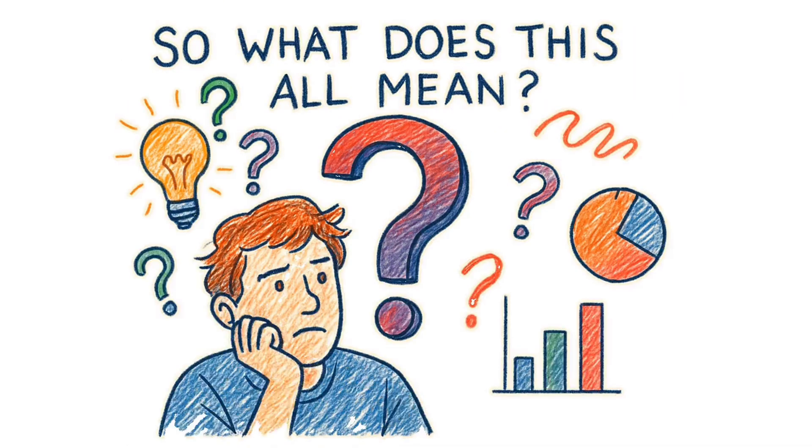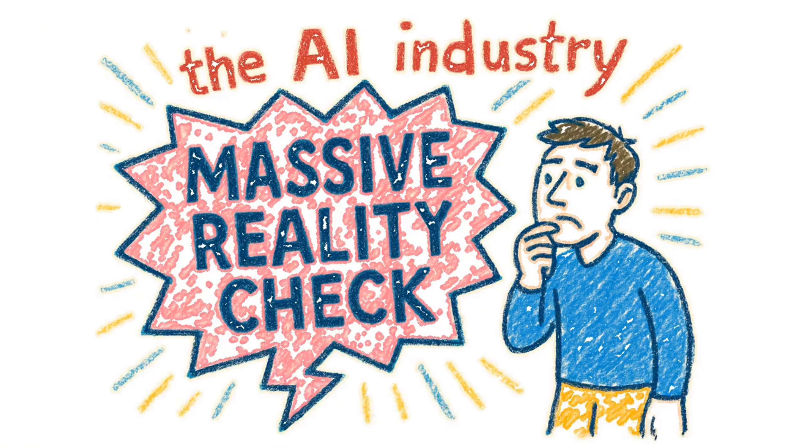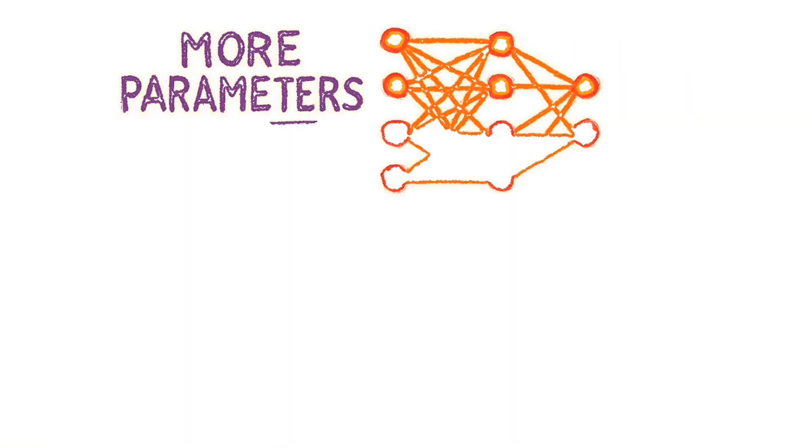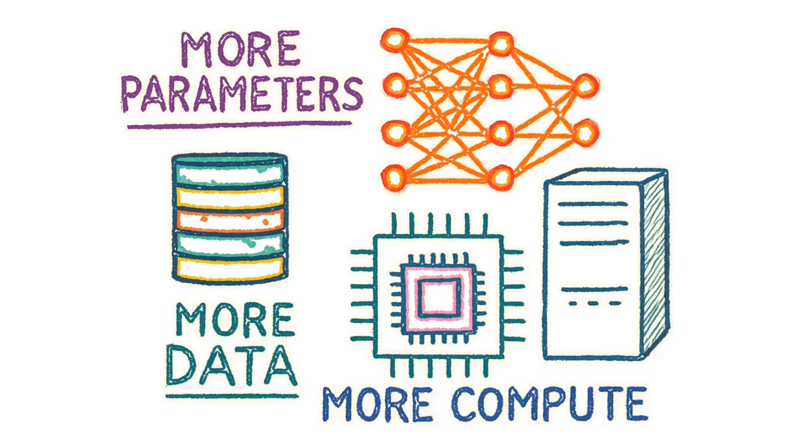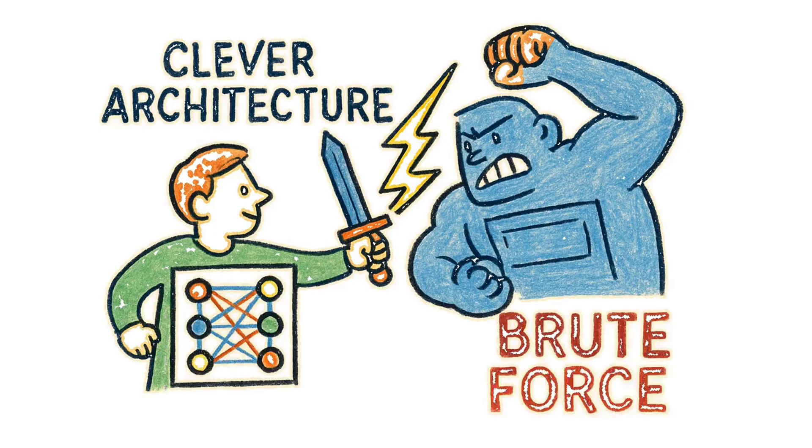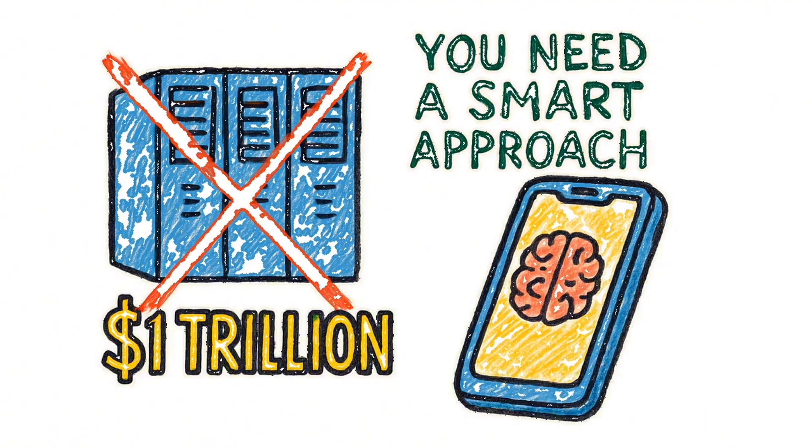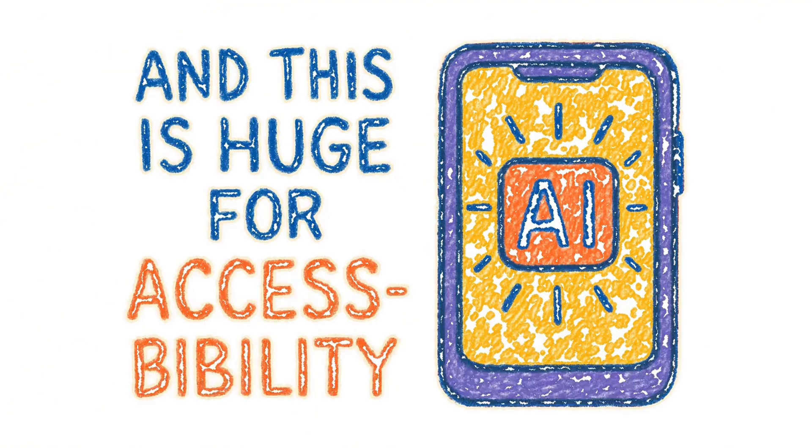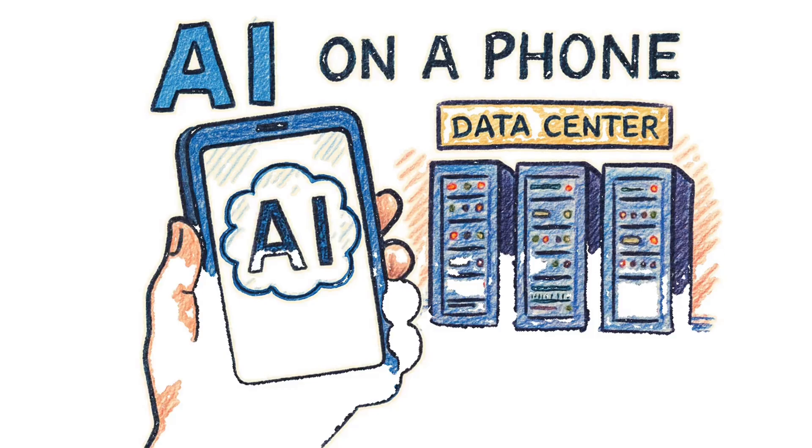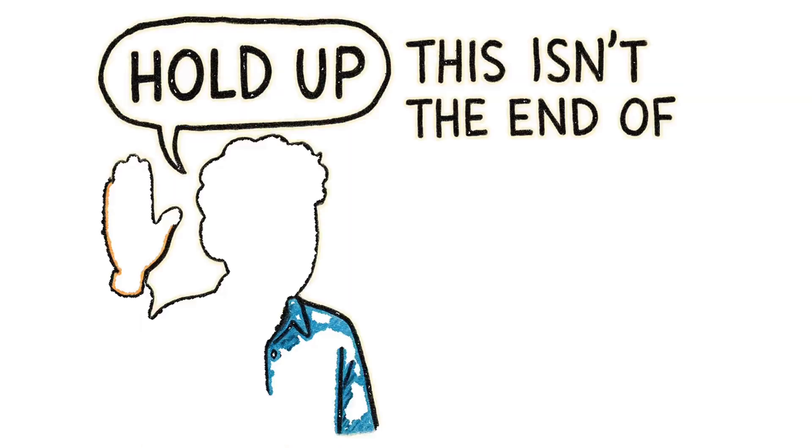So what does this all mean? For starters, it's a massive reality check for the AI industry. We've been told for years that bigger is better. More parameters, more data, more compute. But TRM proved that clever architecture beats brute force. You don't need a trillion dollar supercomputer. You need a smart approach. And this is huge for accessibility. If you can run powerful AI on a phone instead of a data center, suddenly AI isn't just for tech giants anymore.